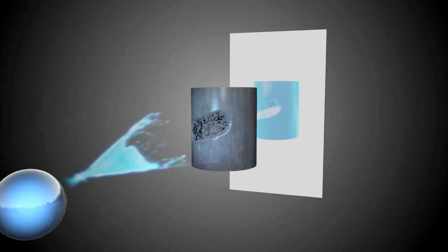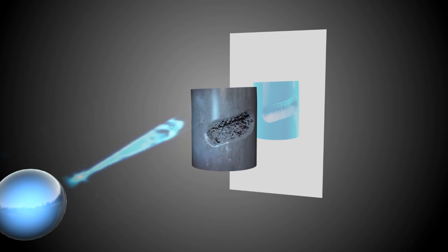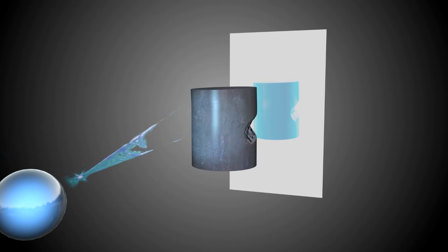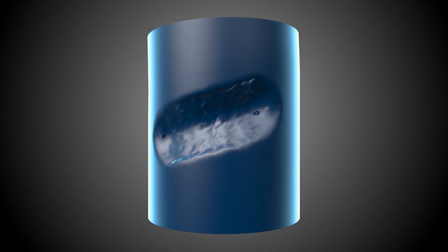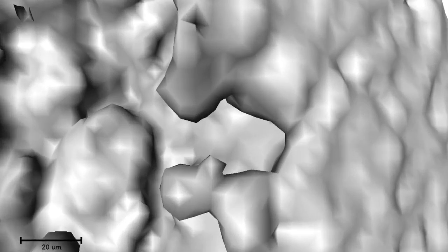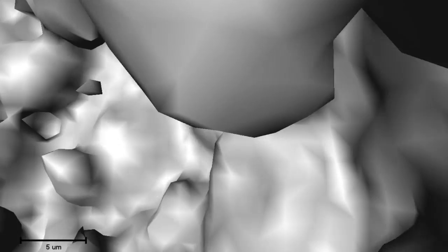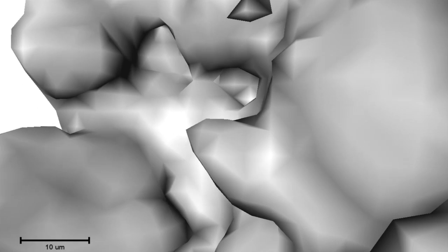Using X-ray computer tomography, we take two-dimensional radiographs of a sample, then rotate the sample and take a range of projections at different angles. We use those projections and a computer to generate a reconstructed three-dimensional image of the sample. We can do this non-destructively over different time periods to look at different stages of corrosion or cracking. We now have three-dimensional images of the pit nucleation site and the transition to intergranular corrosion.